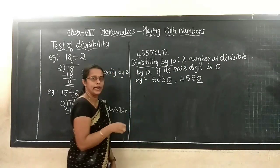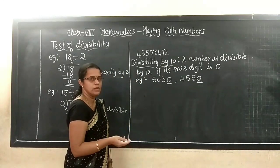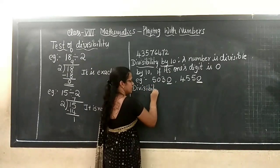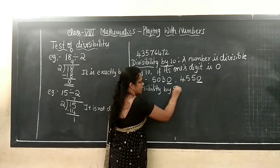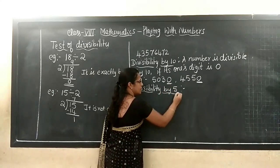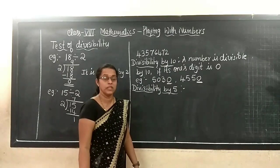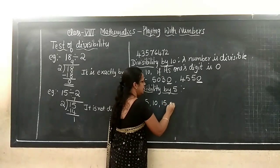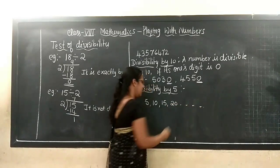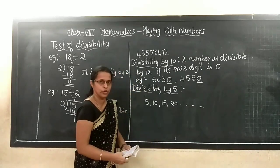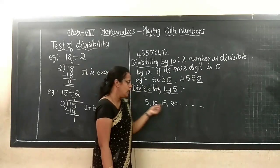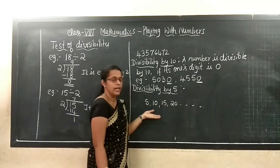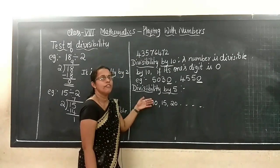After learning divisibility by 10, let us learn divisibility by 5. What is divisibility by 5? If you think of multiples of 5: 5 ones are 5, 5 twos are 10, 5 threes are 15, 5 fours are 20. What can you observe? Each number ends with a digit 0 or 5 — alternately 0 or 5. Such numbers are divisible by 5.